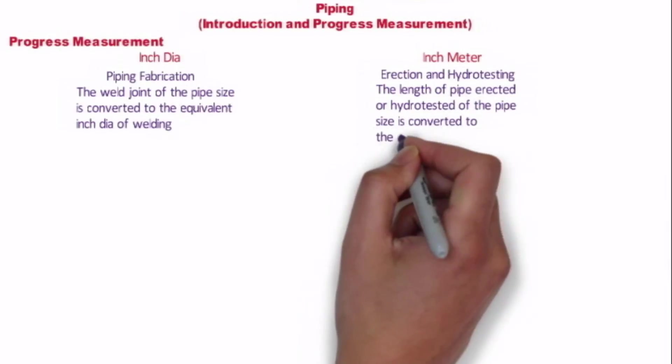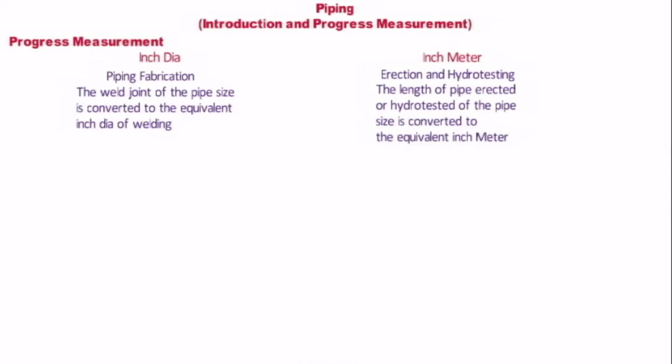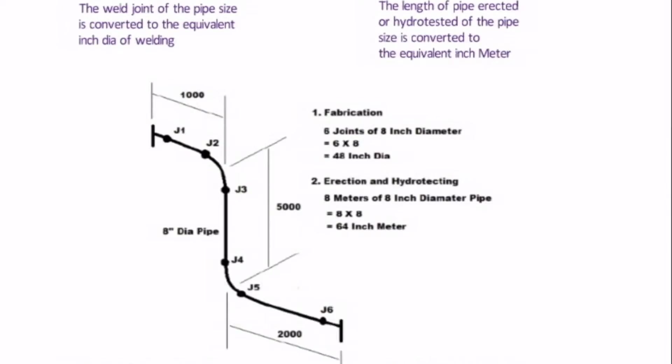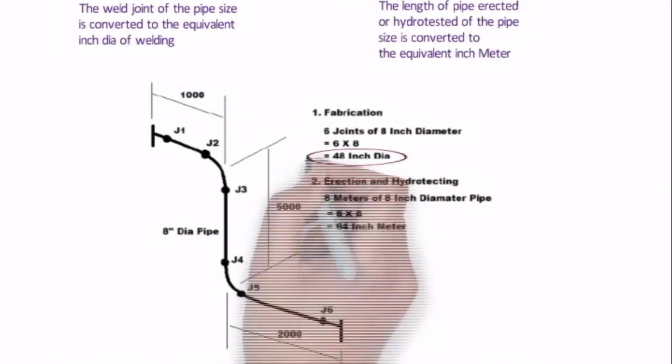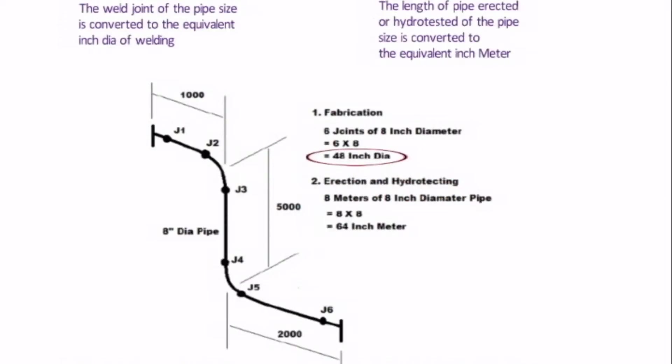Let's see the example. In this example we have 8 meter pipe having 6 weld joints. For that in fabrication we have 6 joints of 8 inch dia, that is 48 inch dia in fabrication.